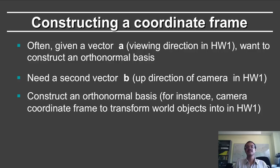But of course an orthonormal basis involves three unit vectors and you can't get it from a single vector. So you need a second vector b, which in homework 1 is the up direction of the camera. So given two vectors a and b, how do you create an orthonormal coordinate frame?